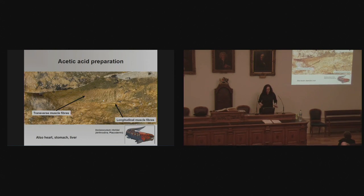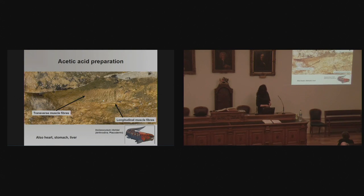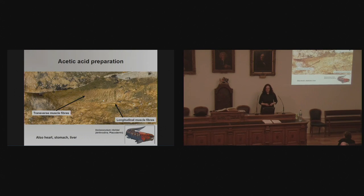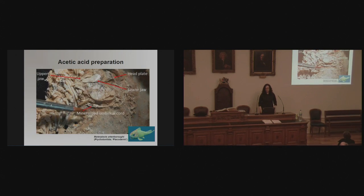With this amazing preservation, what you also get exposed by the acetic acid preparation are soft tissues — soft tissues 380 million years old, including muscles. Here we have muscle fibers going in two different directions — two different sets of muscles. Kate and John have also found other soft tissues like the heart, stomach, and liver in other fossil fish from the Gogo Formation. This happens to be in the placoderm called Incisoscutum, a member of the Arthrodira, and we'll be talking about Incisoscutum quite a bit.